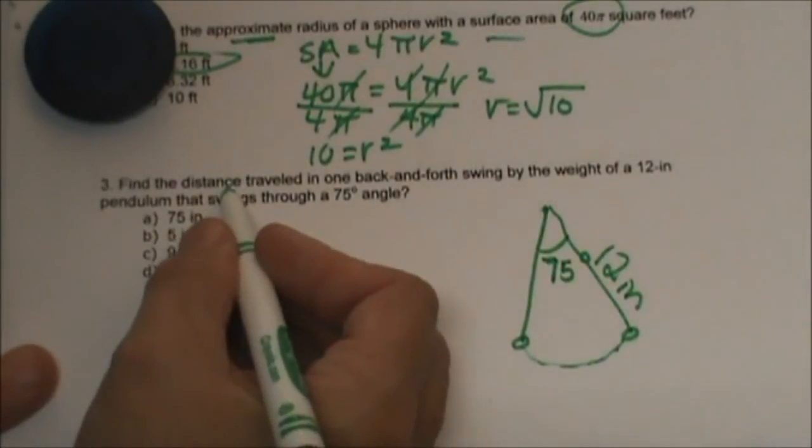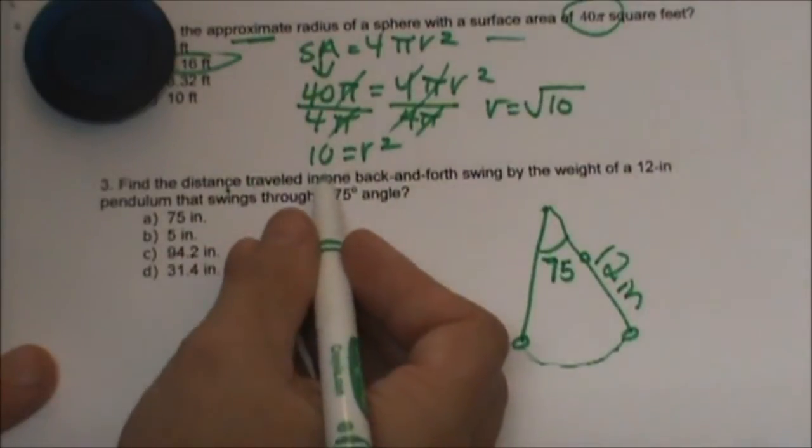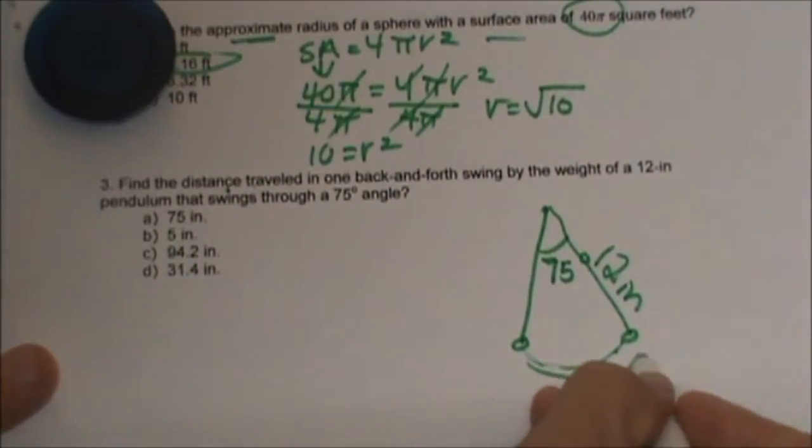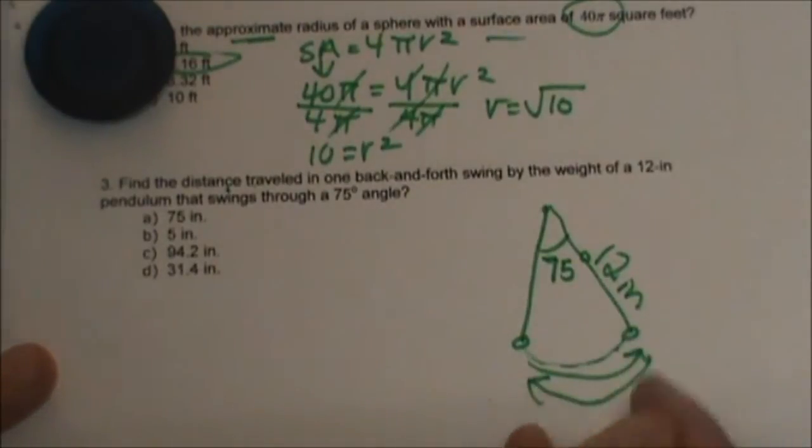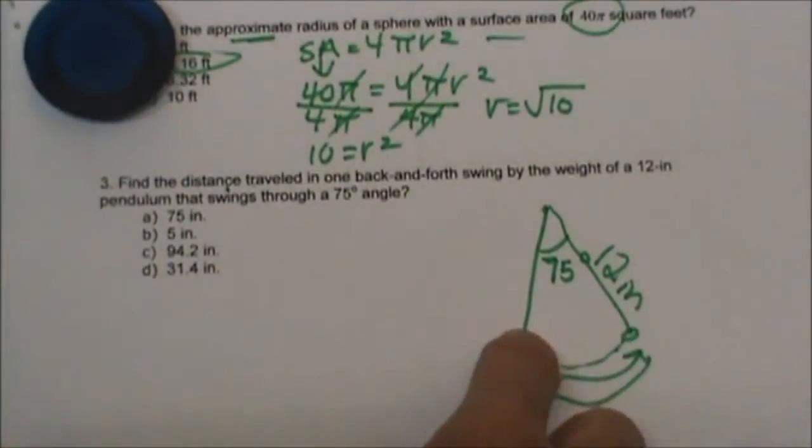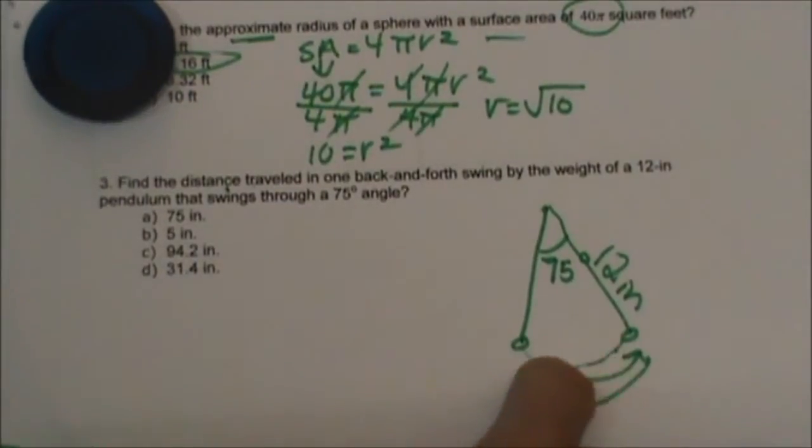Find the distance traveled in one back and forth movement. So what am I finding, what is this part of a curve called? Is that sector area or arc length? I hope you are saying arc length.